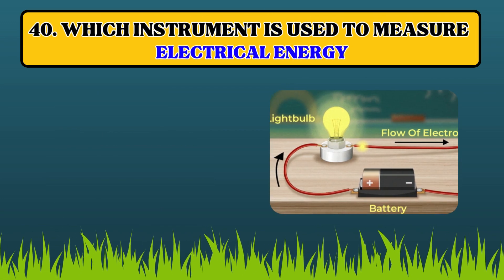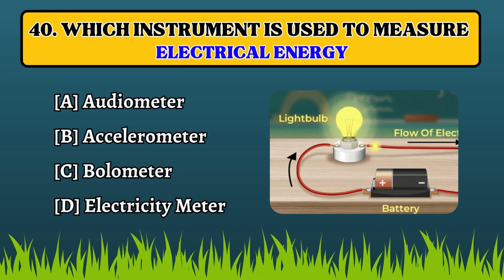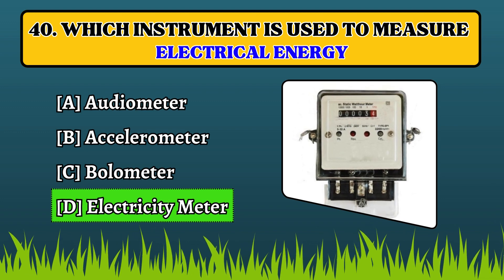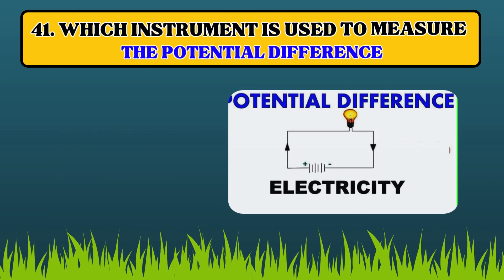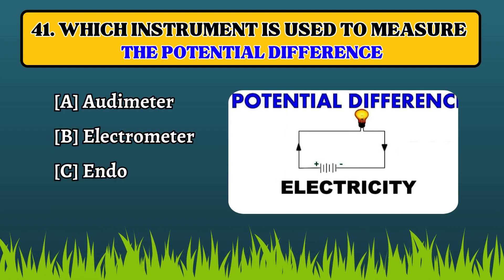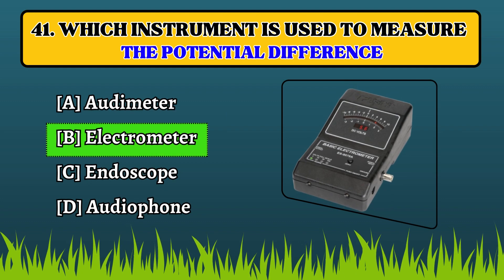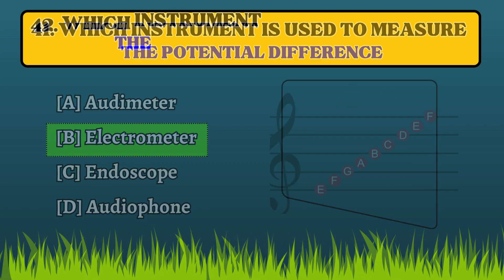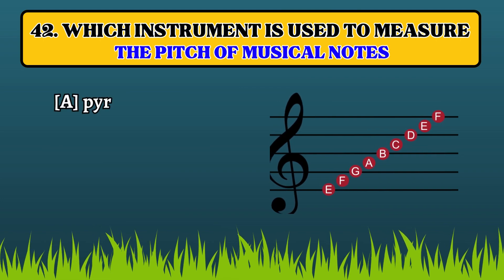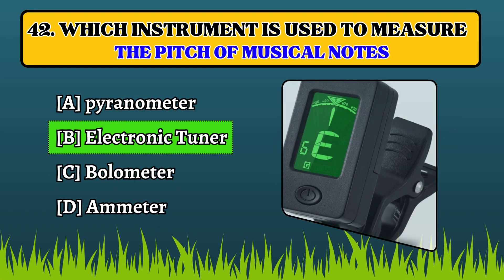Which instrument is used to measure electrical energy? Electricity meter. Which instrument is used to measure the potential difference? Electrometer. Which instrument is used to measure the pitch of musical notes? Electronic tuner.